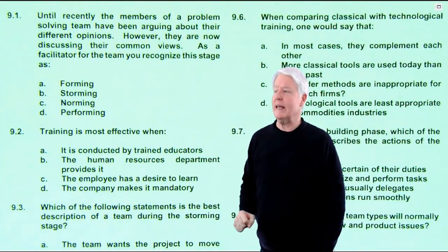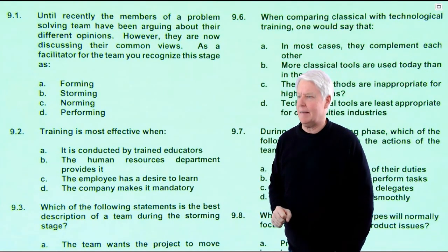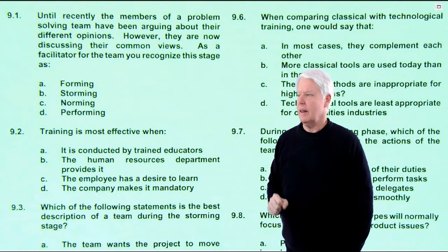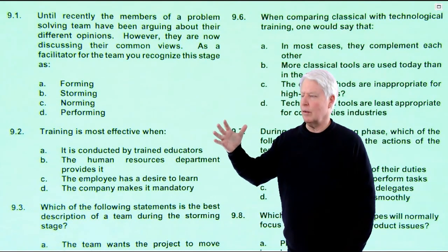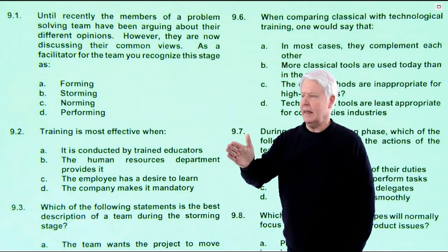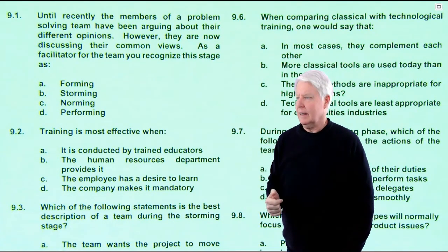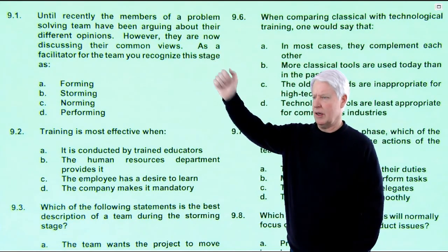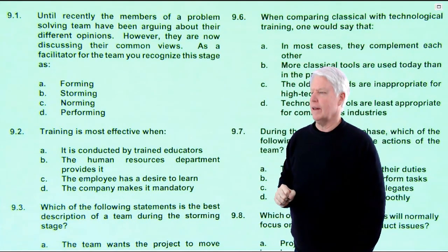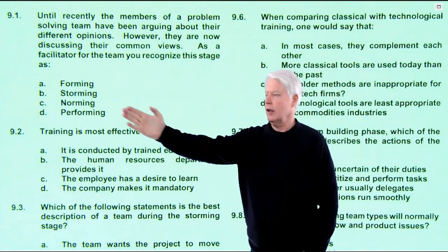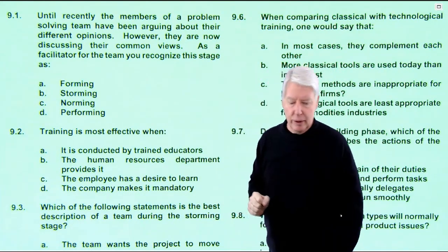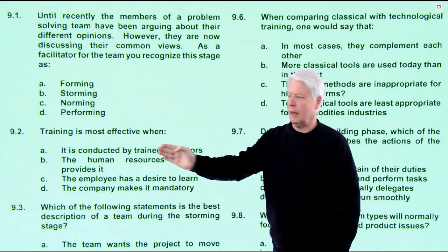Question 9.1: Until recently, the members of a problem-solving team have been arguing about their different opinions. However, they are now discussing their common views. It looks like they went through forming and they were in storming when arguing. Now they've gotten over the arguing — forming, storming, norming. Sounds like they're in the norming stage now. As a facilitator, you recognize this stage as norming — C. 9.1 is C, and that is correct. That was a pretty easy one.